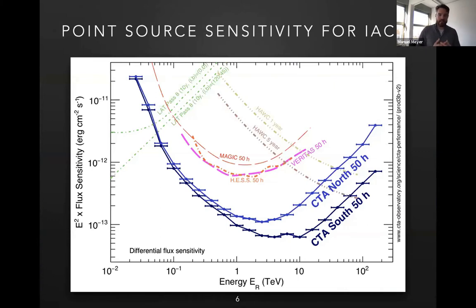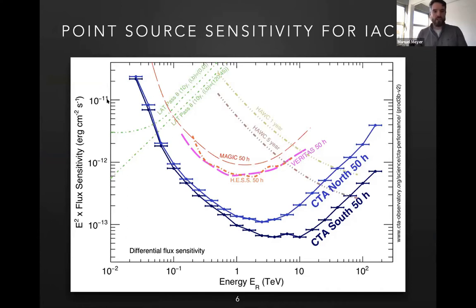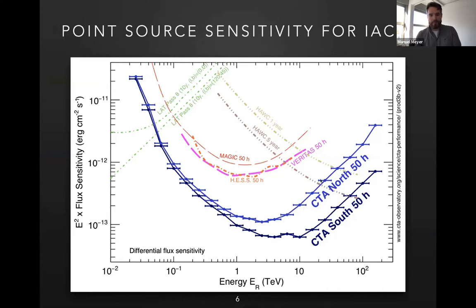Let's have a quick look at the sensitivity of these instruments. As a function of energy, you see the flux required from a point source to get a five-sigma detection within a 50-hour observation time. You can see the currently operating telescopes — MAGIC, HESS, and VERITAS — with MAGIC extending a little bit to lower energies. And then you can see what is foreseen for CTA. The northern array will have a little bit less sensitivity at high energies because it has fewer mid-sized telescopes and no small-sized telescopes, which is why you get higher sensitivity for the southern array.